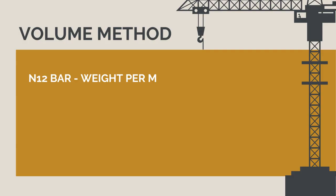So for an N12 bar, we are going to calculate the weight per meter. Using the formula length by diameter squared by pi divided by 4 by the weight of steel per cubic meter, we get 0.88 kilograms per meter of N12 bar.